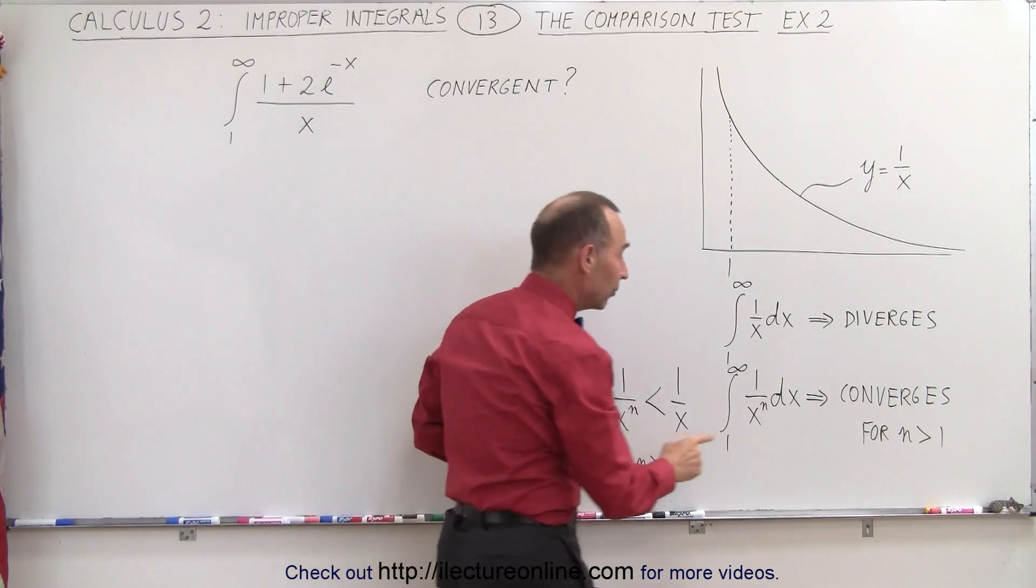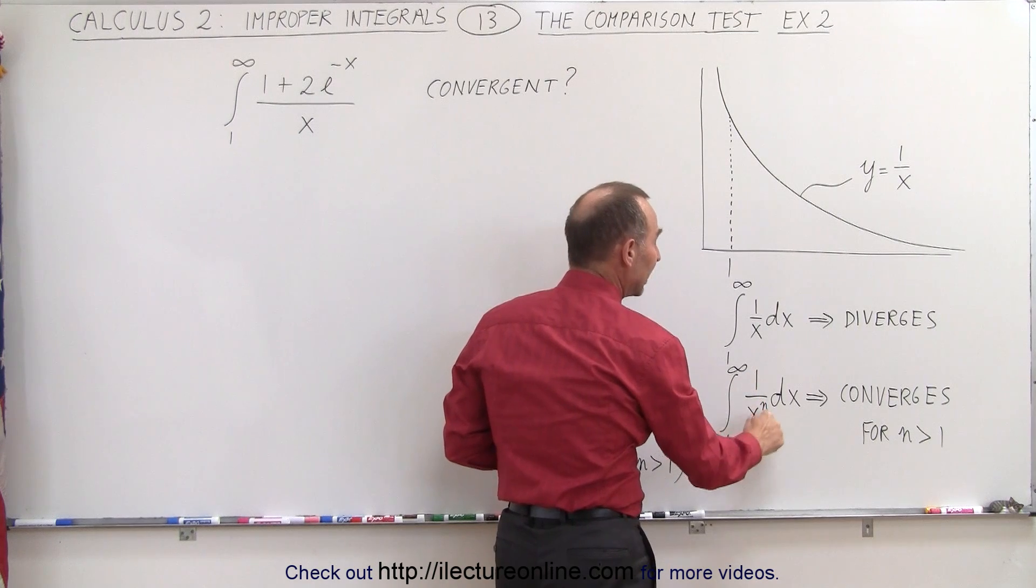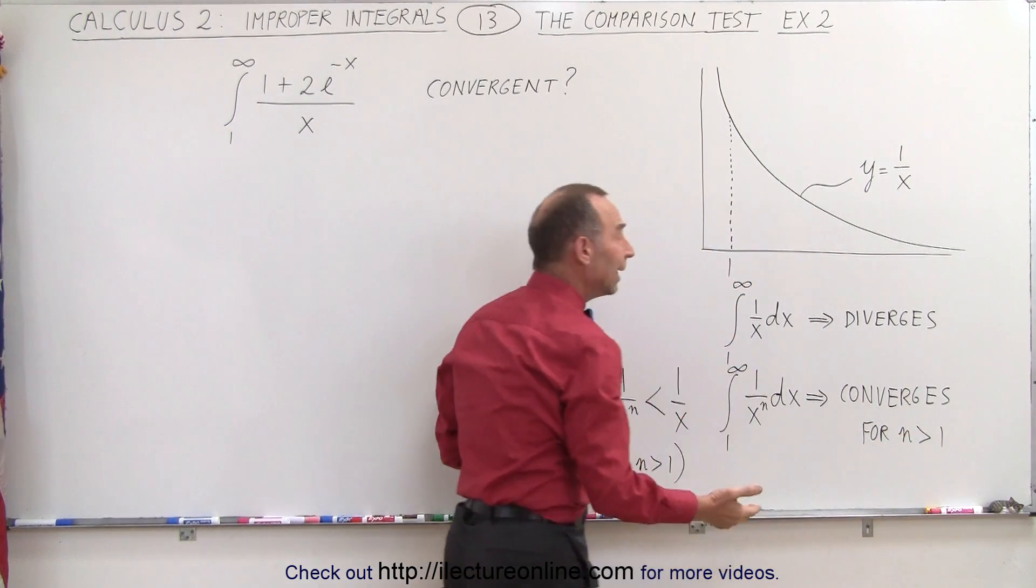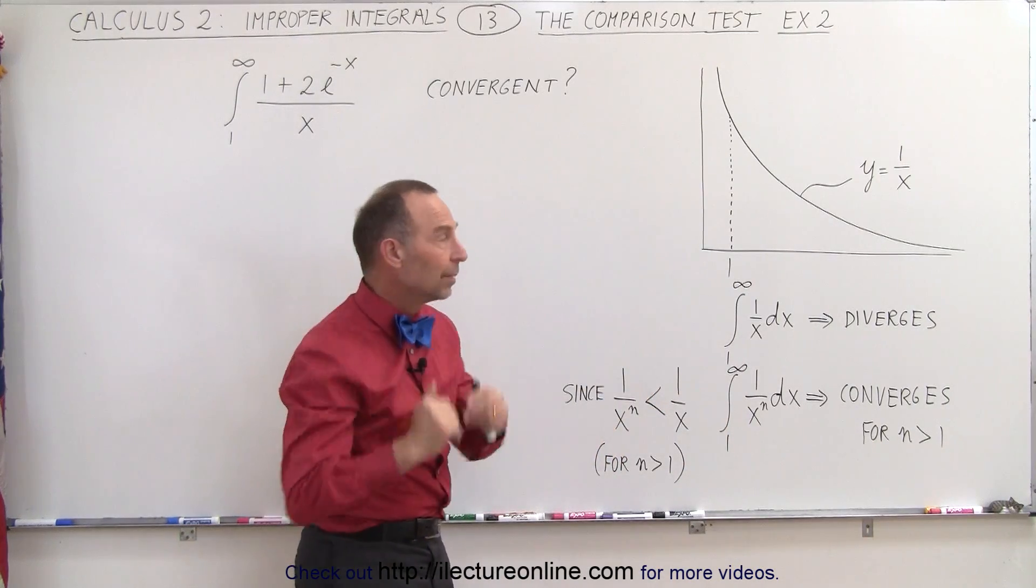We also know that if we integrate 1 over x to the n power dx for n greater than 1, then it does converge. That's kind of the limit at that point.